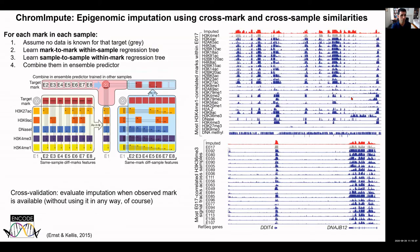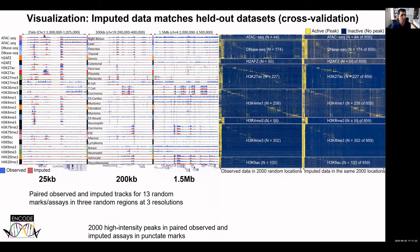ChromImpute looks at the combination of within-sample and within-mark inferences to predict a target data set at very high resolution before actually observing it. The predictions match the observations quite nicely, thanks to the similarity of different marks within the same cell type and the similarity of different cell types for the same mark. Doing this systematically, the EpiMap data shows very strong agreement between a large diversity of marks across observed and imputed data at loci spanning 25 kb, 200 kb, and 1.5 megabases.